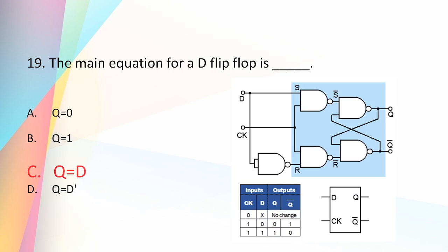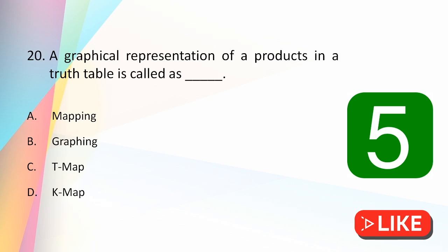For a D flip-flop, when the clock is high, the output Q will be 0 if the input D is 0, and Q will be 1 if the input D is 1. That is, the D flip-flop acts like a transparent circuit when the clock is enabled (high).